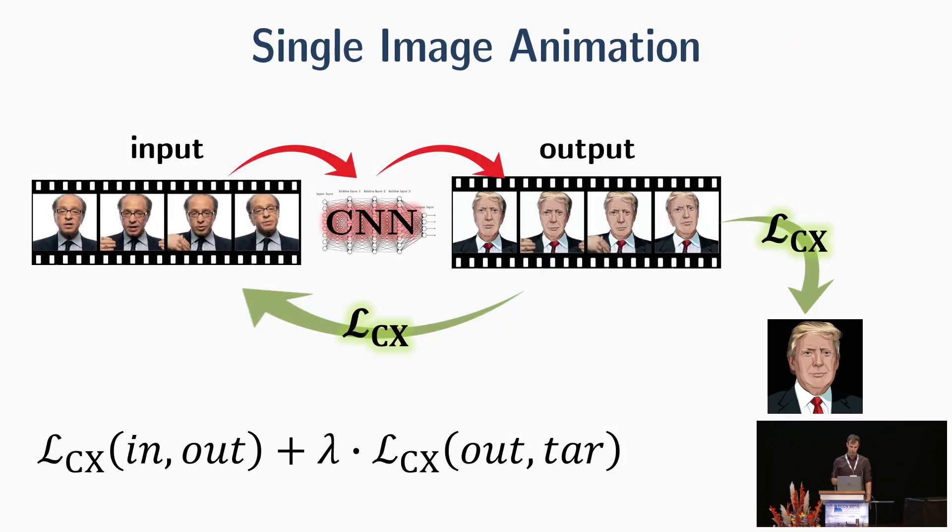In our second application, we change the setting a bit. Instead of the optimization problem, we train a CNN using a video of a person's talk. At each iteration, we match between the output image and a single still target image as this Trump cartoon on the right. We use additional loss term between the input and the output in order to control the pose. Here again, we use the contextual loss.